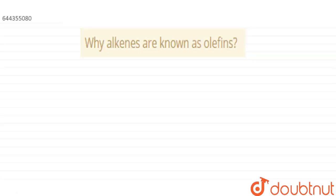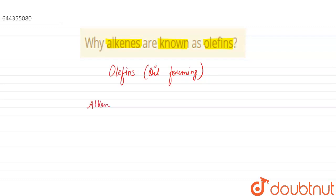Hello everyone. The question is: why are alkenes known as olefins? Olefins means oil forming. So the meaning of olefins is oil forming.